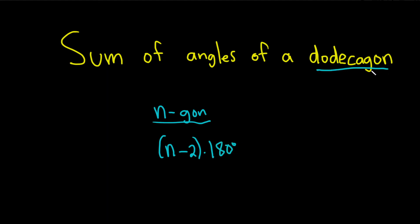So a dodecagon has 12 sides. So all you have to do in this problem is just take the 12, because it's a 12-gon, it's the same thing, and just plug in 12 for your n.